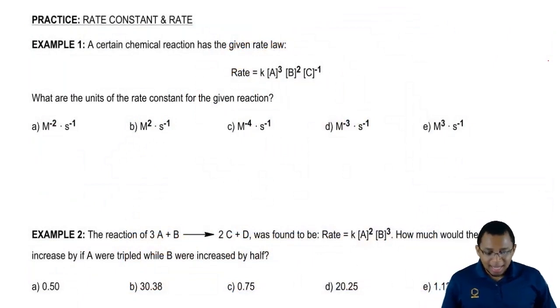Let's take a look at the first question. It says a certain chemical reaction has the given rate law. Rate equals K, A to the 3, B to the 2, and C to the negative 1. What are the units of the rate constant for the given reaction?